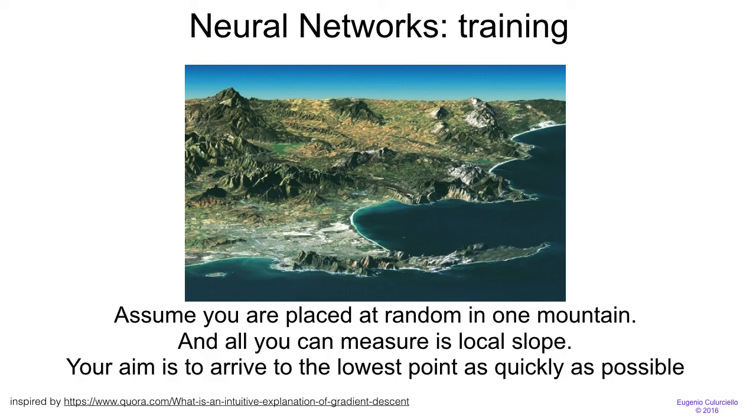So in order to think about the neural network training, I want to exemplify a little bit and make you think about how this training is going to be done. So imagine neural network training can be thought of as this problem. Assume you are placed at random in one of the mountains, in one location of this picture, maybe close to one of the mountains. And all you can do is measure local slope. Your aim is to arrive at the lowest point in this image as quickly, lowest land point, not necessarily as low as possible.